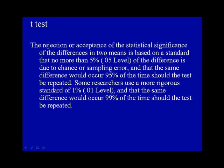The rejection or acceptance of the statistical significance of the differences in two means is based on a standard that no more than 5% of the difference is due to chance or sampling error, and that the same difference would occur 95% of the time should the test be repeated.